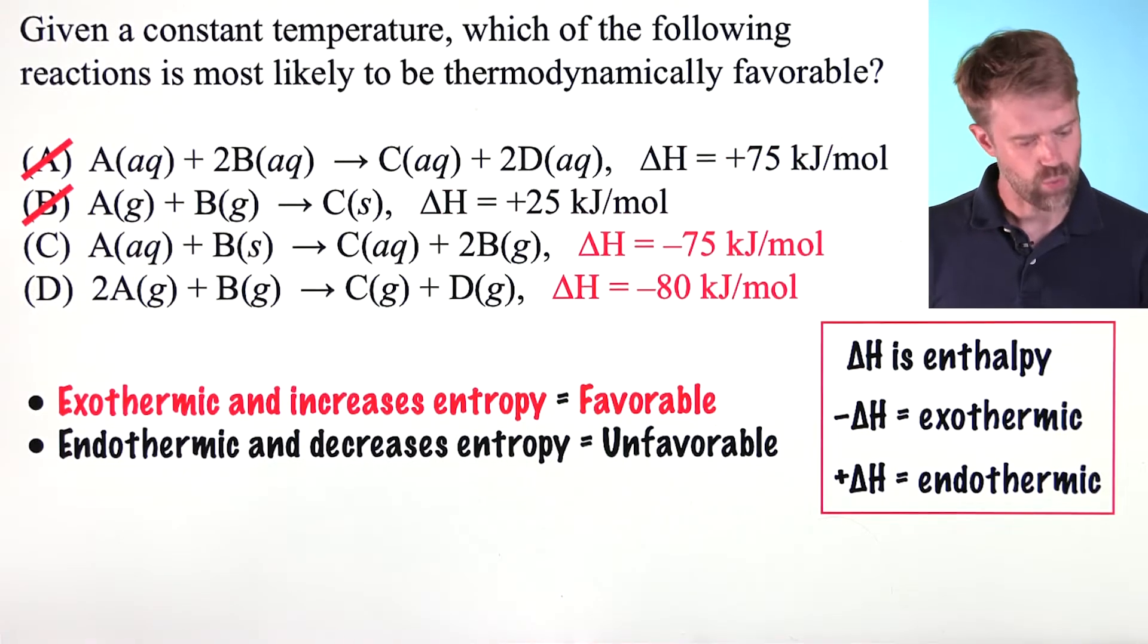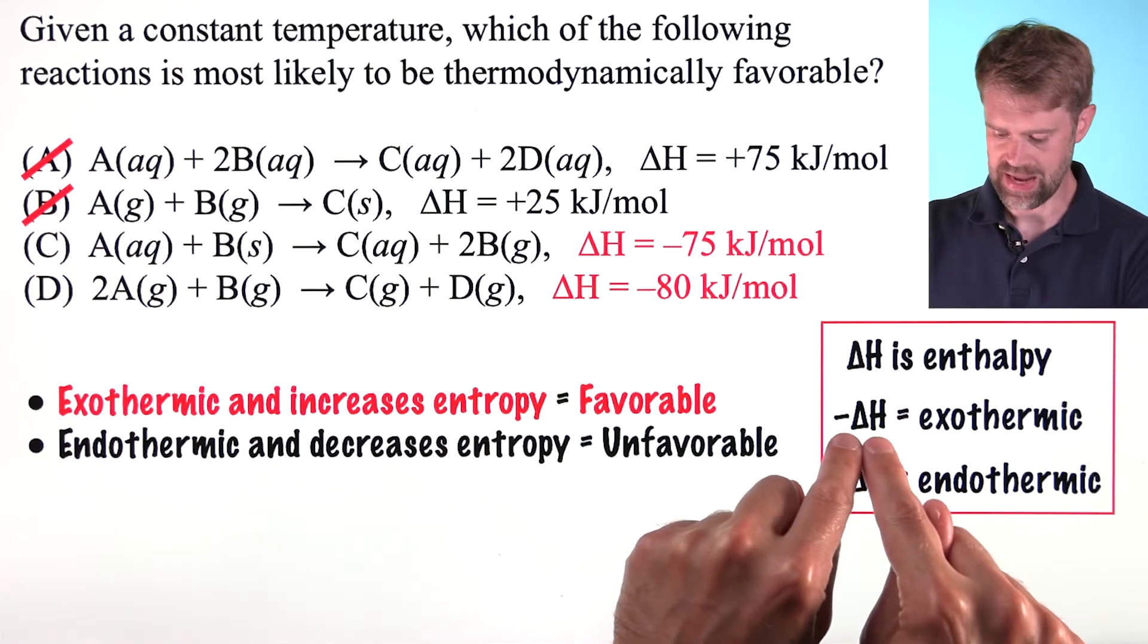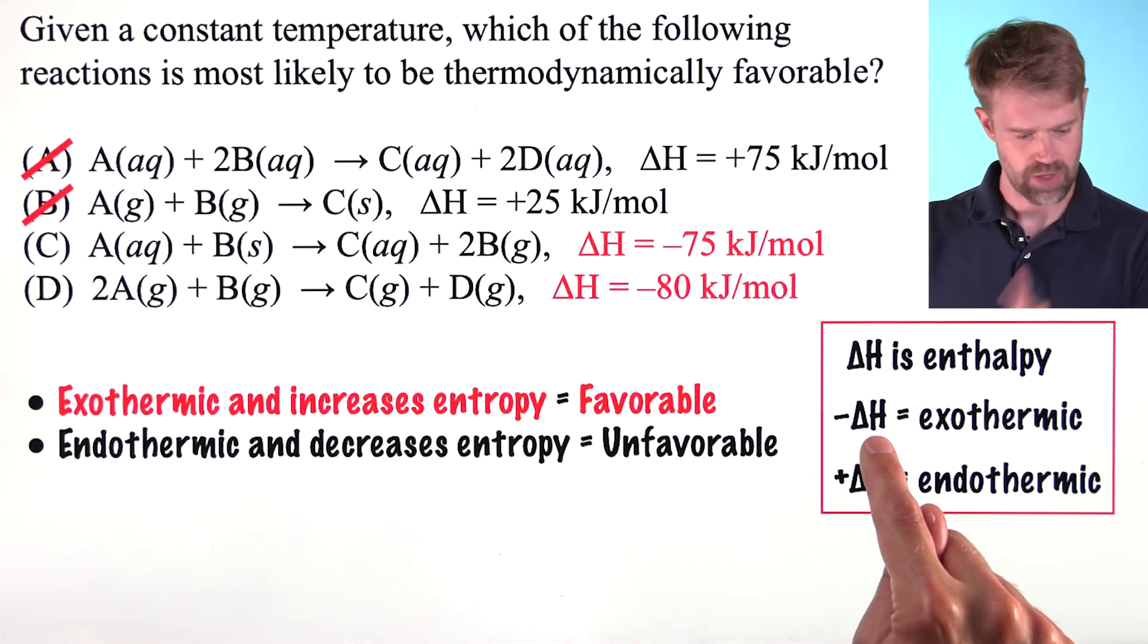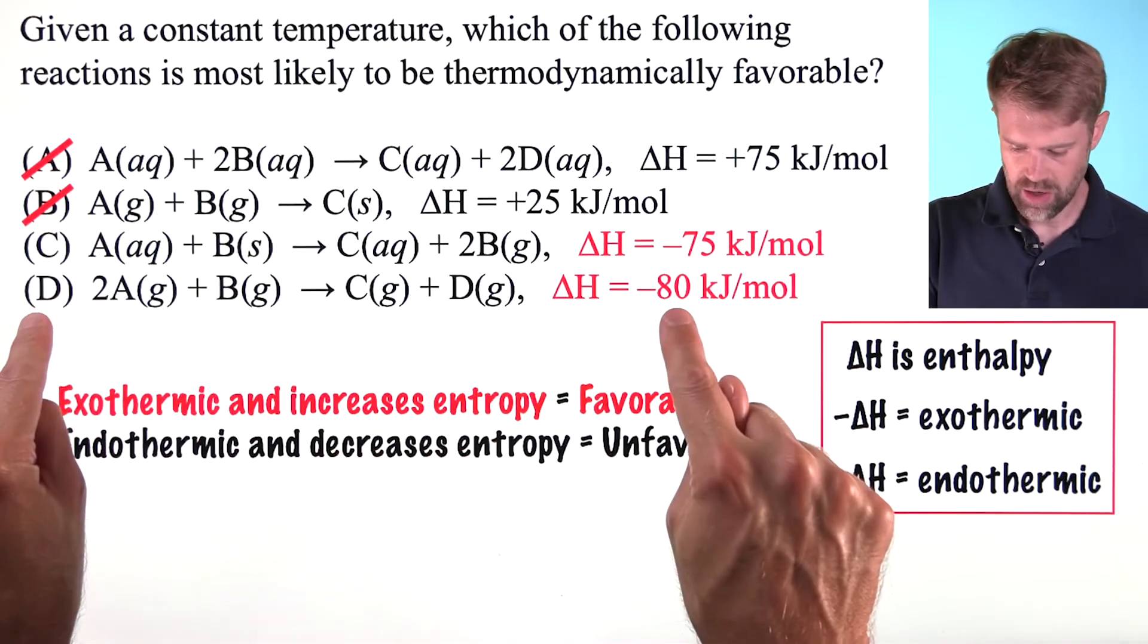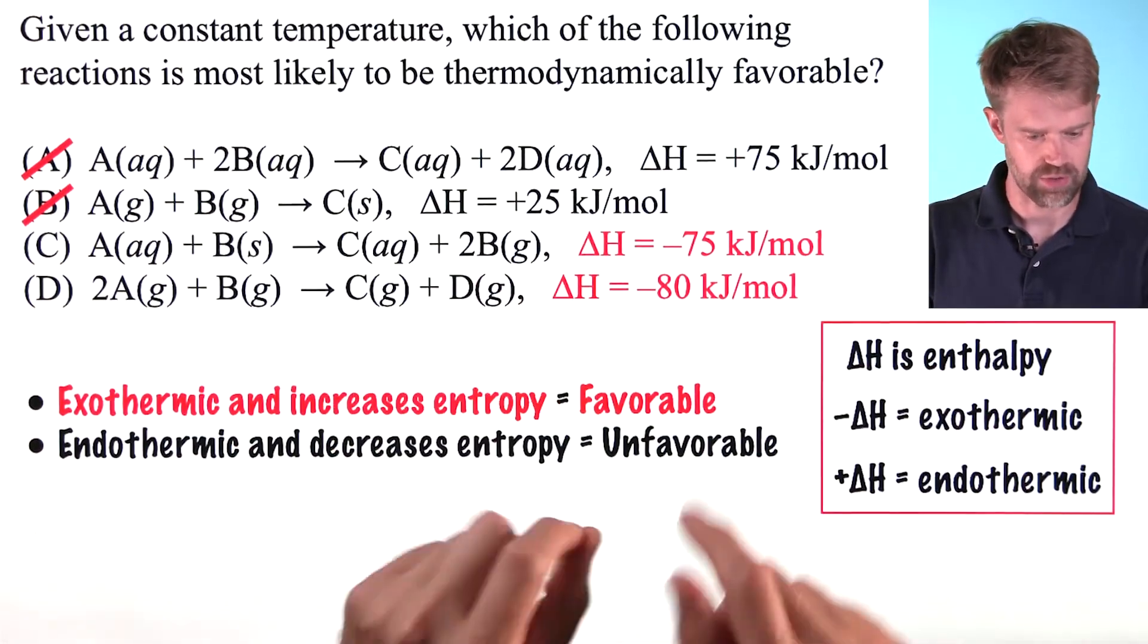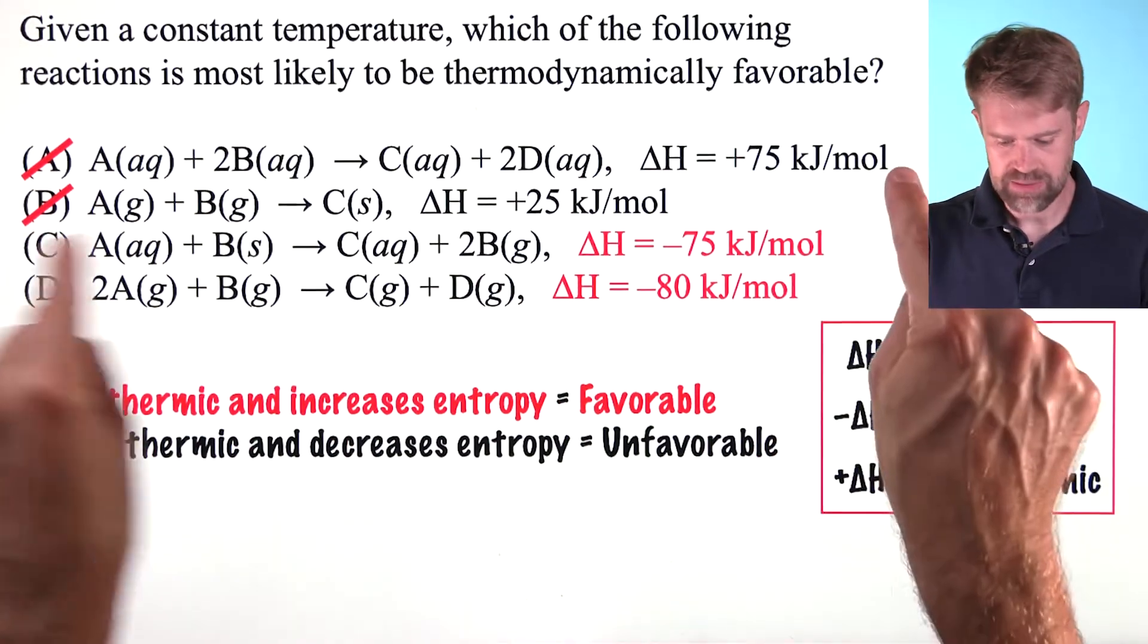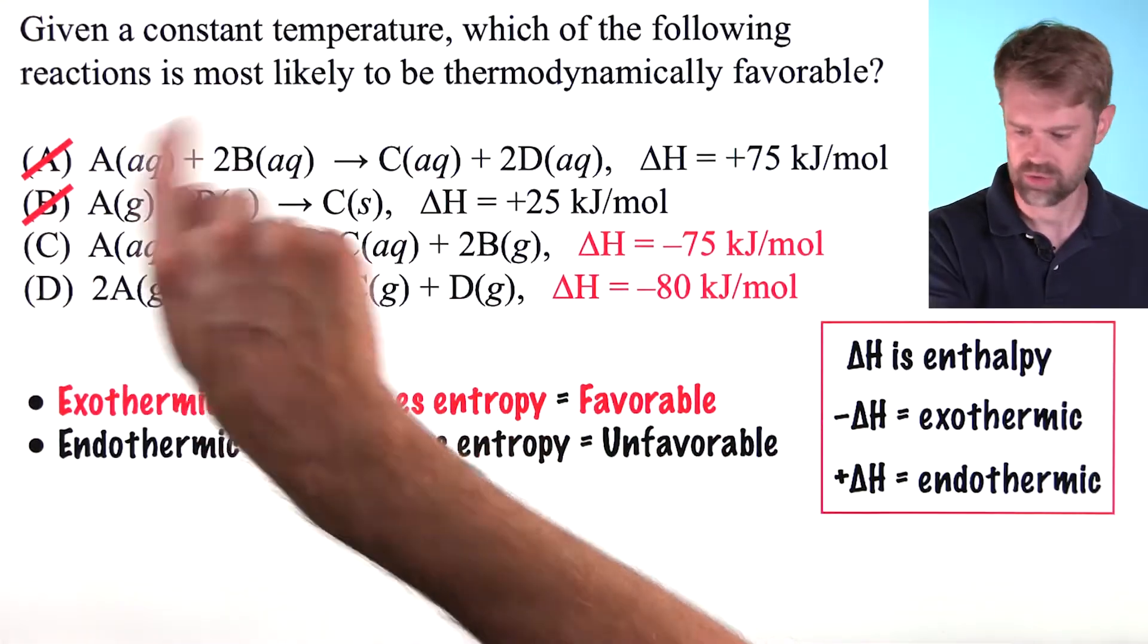So, right off the bat, we are going to be looking for exothermic reactions with a negative delta H. You can see that choices C and D are both exothermic because they have these negative delta H values. But choices A and B are endothermic with a positive delta H. So, we can just go ahead and cross those off right away.